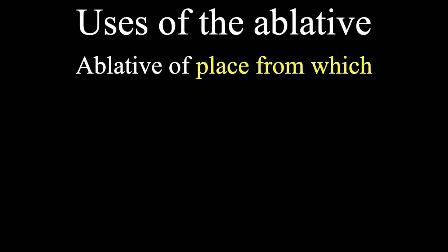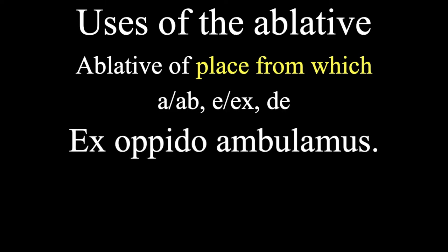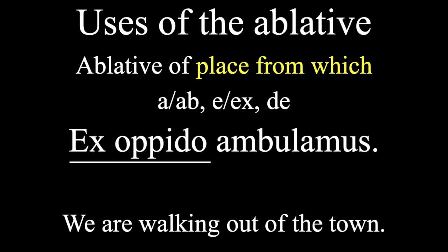The ablative of place from which tells us where we're coming from, and usually shows up with the preposition a or ab, which means away from, e and x meaning out of, and de meaning down from. So, in the phrase, ex alpido ambulamus, we have our prepositional phrase here. And this means, we are walking out of the town.